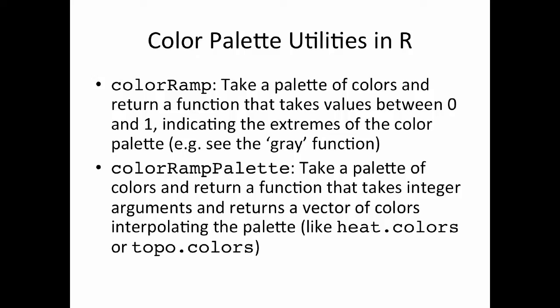The colorRamp function specifically takes a palette of colors and returns another function. That returned function takes values between 0 and 1 indicating the extremes of the color palette. A similar existing function in R is the gray() function, which interpolates between black and white. colorRamp is a generalization — it takes any set of colors and returns a function that interpolates between the extremes.